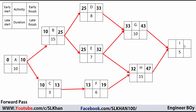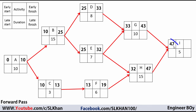Activity I depends on two activities, so we take the maximum early finish value. The values are 47 and 43, so we take 47 as the early start of I. Adding the duration: 47 plus 5 equals 52 days — the early finish of Activity I.